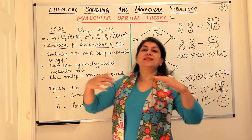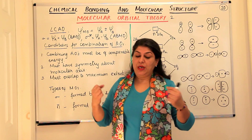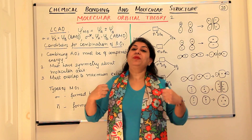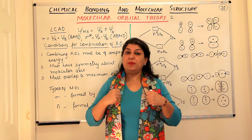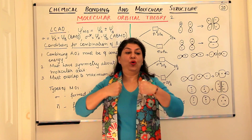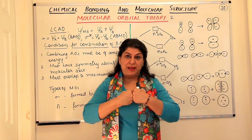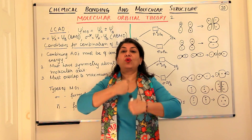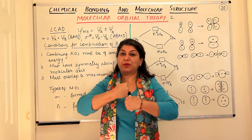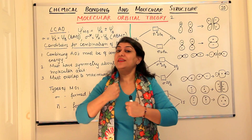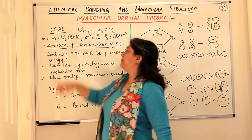ABMO stands for anti-bonding molecular orbital and BMO for bonding molecular orbital. If the bond is a sigma bond—in hydrogen both the orbitals are 1s orbitals so a head-on overlap takes place—when head-on overlap takes place between the orbitals, the bond is a sigma bond.